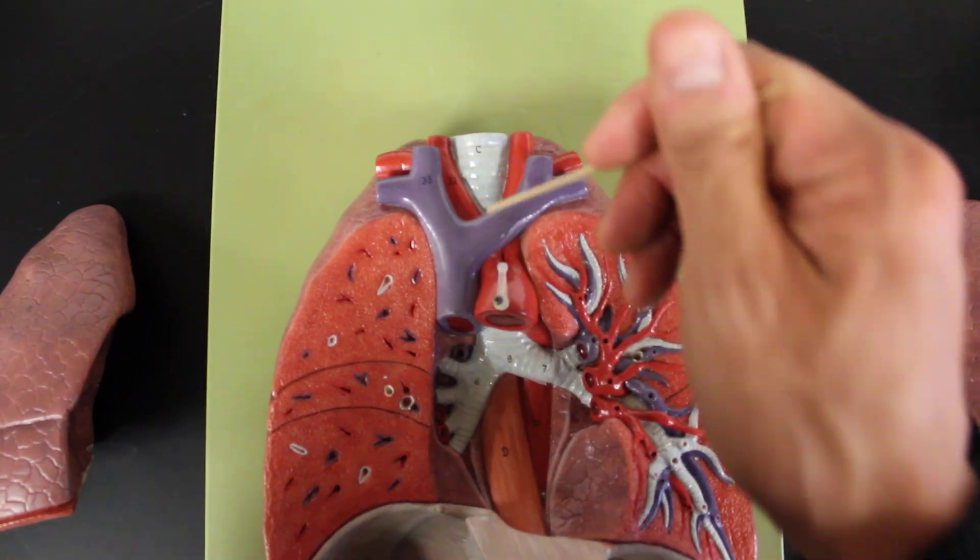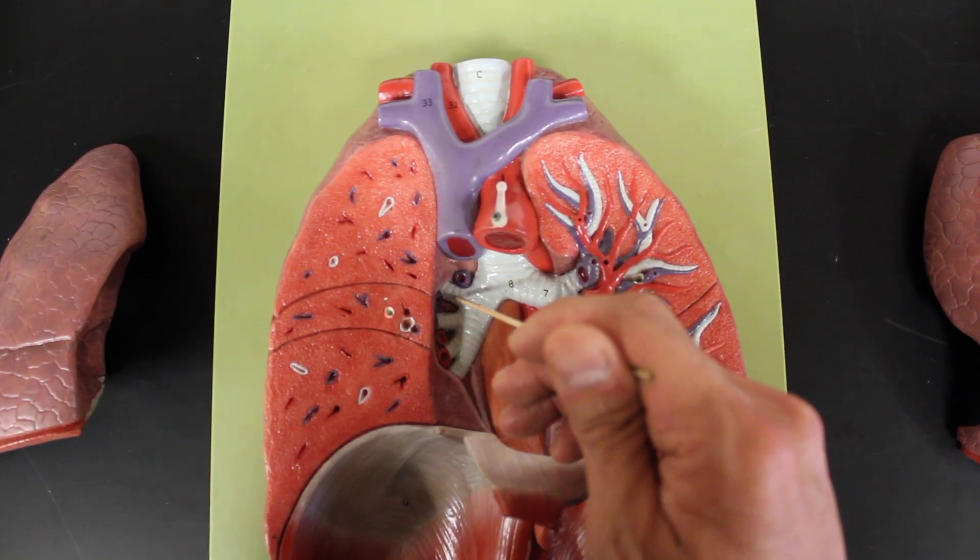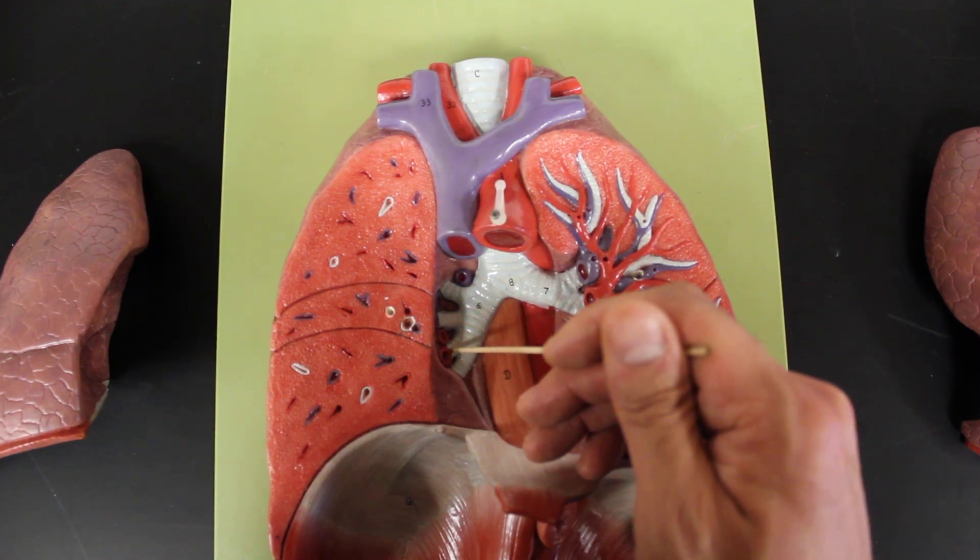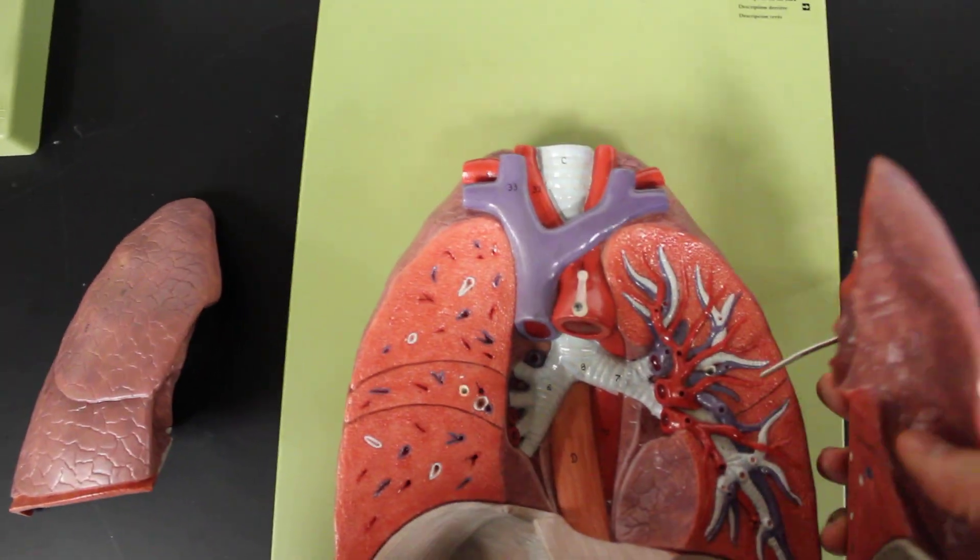Continue on in the trachea, which branches into right and left primary bronchi, which go into secondary bronchi, three on the right, two on the left, and then the tertiary bronchi. And then we can also see the different types of structures of the lungs.